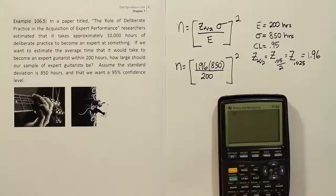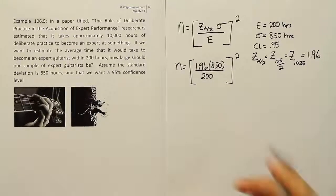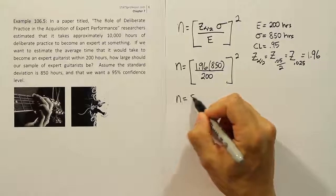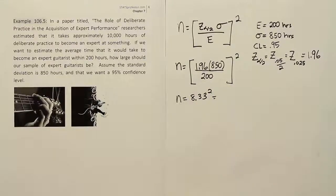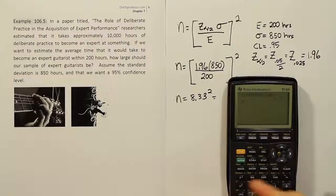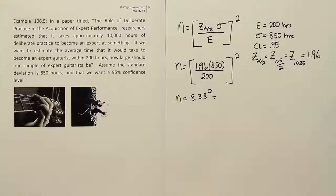Okay, so let's calculate 1.96 times 850 divided by 200. Notice I do all that in one step. I divide, then I'll square it afterwards. So we have 8.33. So n equals 8.33 squared. Let's square that. If I square 8.33, it gives me 69.3889.